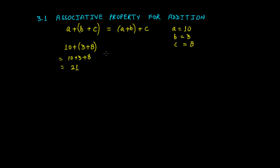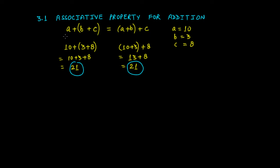For (a + b) + c: (10 + 3) + 8 = 13 + 8 = 21. Both values are equal — we get 21 in both cases. So a + (b + c) = (a + b) + c is satisfied. Therefore, addition of integers follows the associative property.